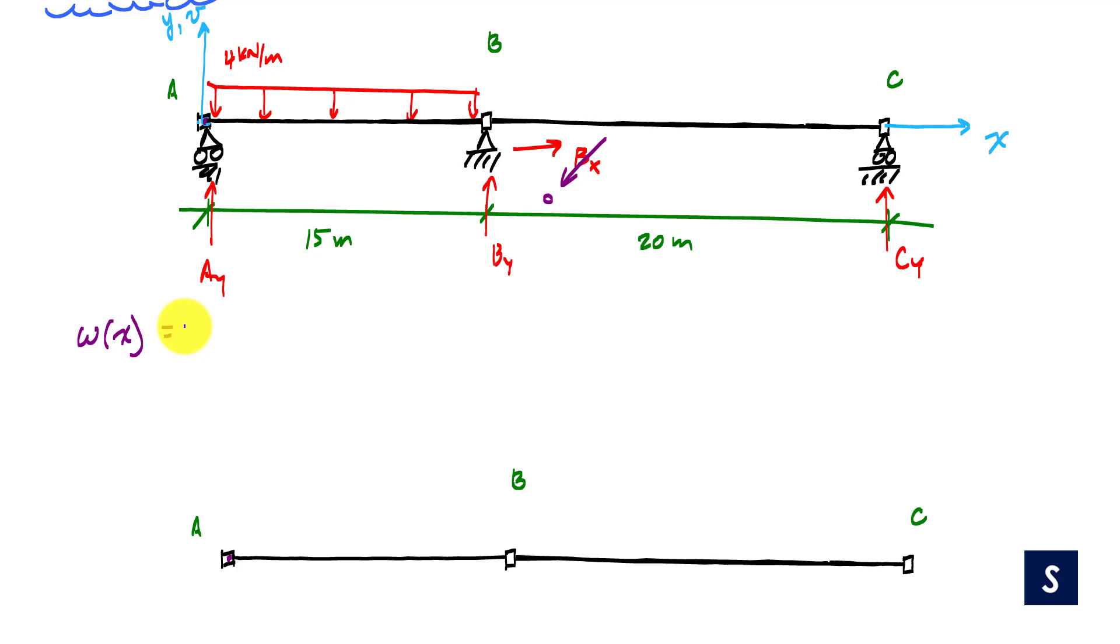So this loading function, we're going to start with a concentrated force Ay, which is pointing upward. So this is Ay times X minus, well, it's placed at X equals zero. So this is X minus zero to the negative one. And that right there, this represents a concentrated force Ay at X equals zero.